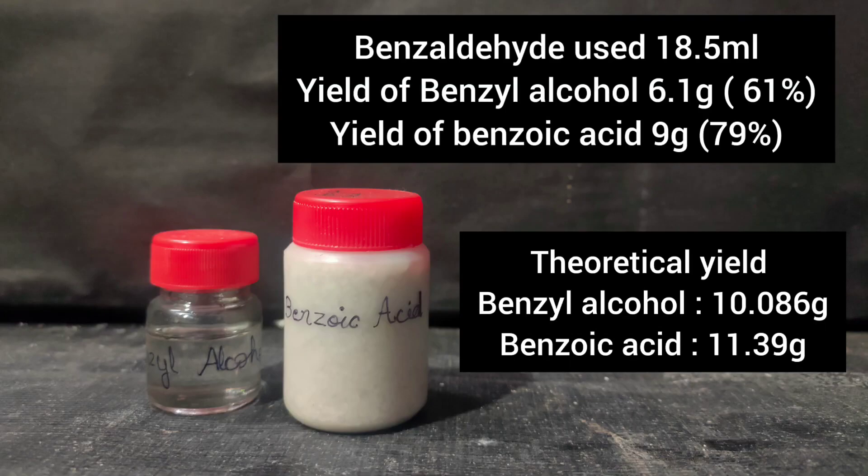Theoretically, benzyl alcohol and benzoic acid should have been formed in equimolar amounts. But yield of benzyl alcohol is significantly lower than benzoic acid as it has to go through solvent extraction and distillation, whereas benzoic acid is just precipitated from the aqueous layer and undergoes recrystallization. So some benzyl alcohol would have been lost in the extraction process and some in distillation.